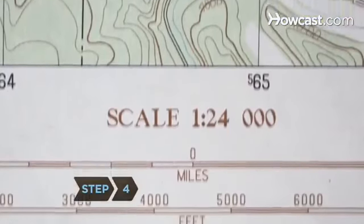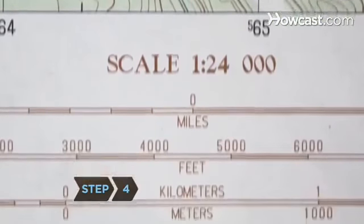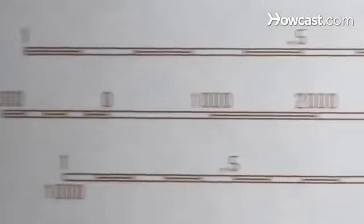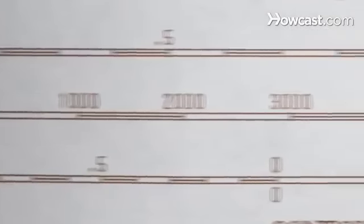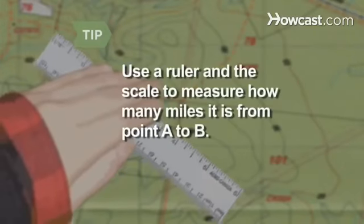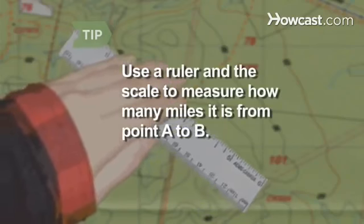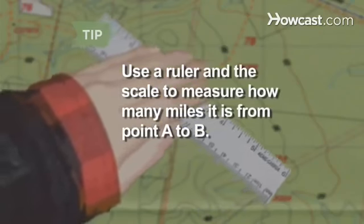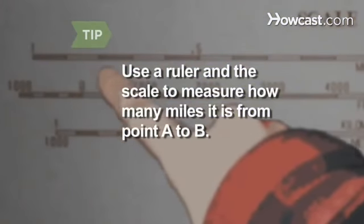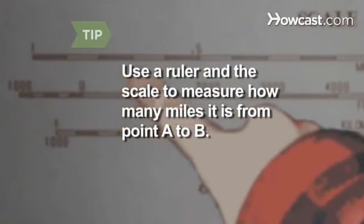Step 4. Find the map scale. The scale looks like a small ruler, often near the bottom of the map. This will tell you how many miles per inch the map is scaled to. To determine how far your destination is, use a ruler and the scale to measure how many miles it is from point A to point B.